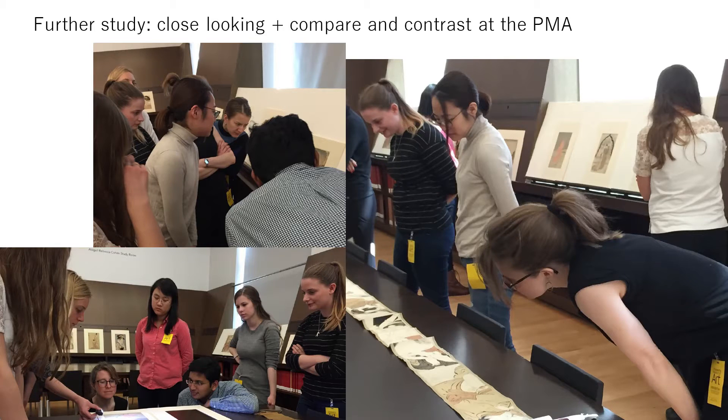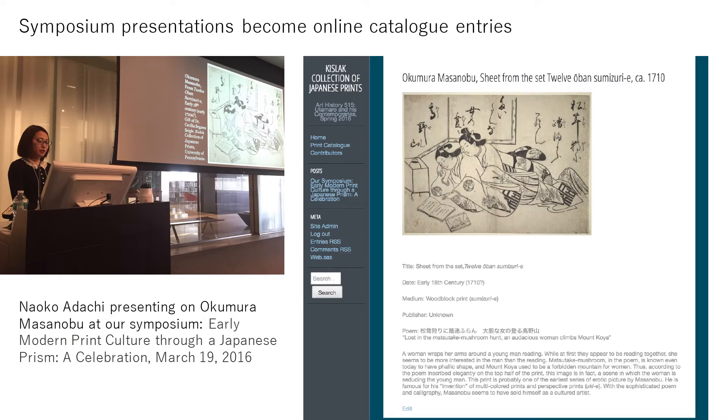Within a couple of weeks, they had all done that, and they'd done what we in the museum trade call the tombstone label — the essential data — and uploaded it to the website. That's the first critical thing you need to do with each work of art. To develop our eye even more, we worked with the Philadelphia Museum of Art to see even more prints. Then we worked toward a five-minute talk on one print for a public symposium we held here on March 19th, and each student presented their research. This short form of analysis became the basis for what is now a catalog entry on the site.